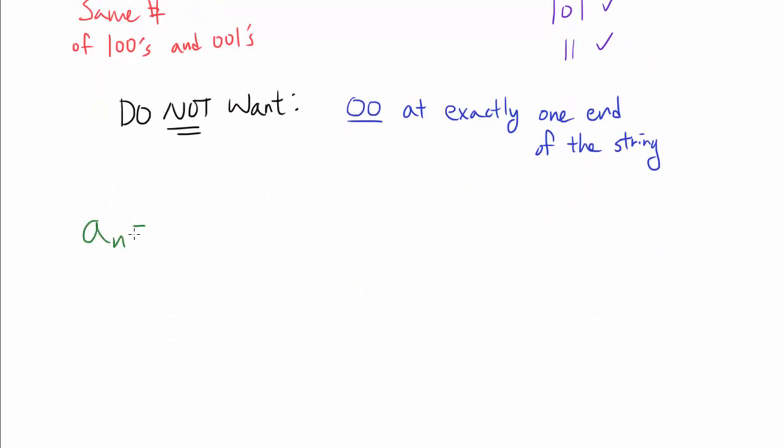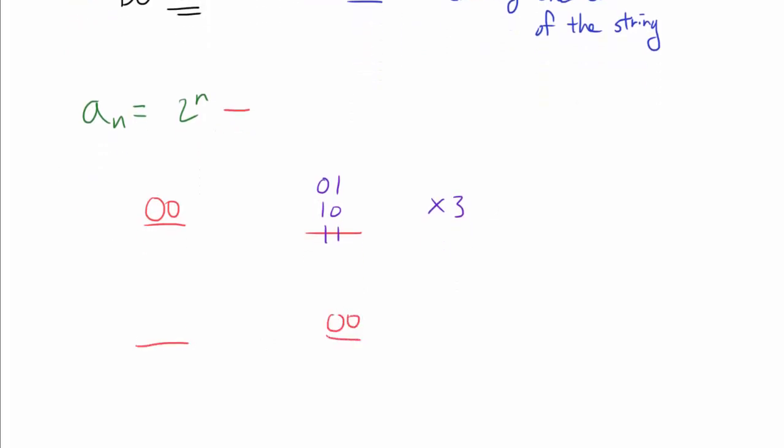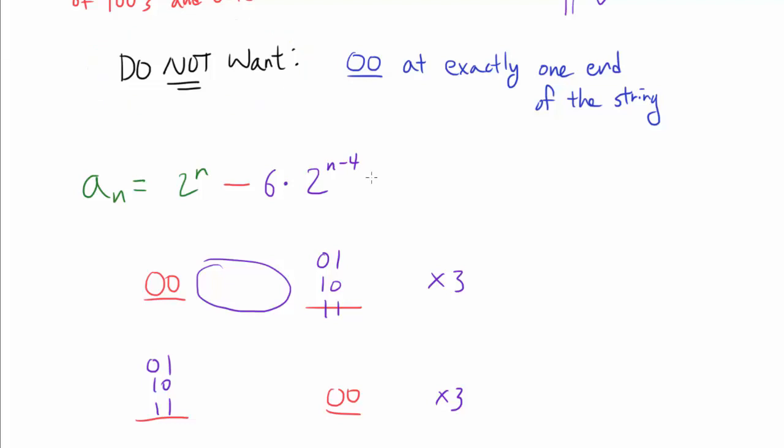Because what is a_n going to be? Well, there are 2^n binary strings of n digits long. And from this, we wish to take away the strings that have 00 at one end and something else at the other end. That something else can be either 01, 10, or 11. So there are 3 choices. Or we can have this reversed. So there are 6 cases we want to avoid when it comes to endings. And once we pick the endings, then we have 2^(n-4) ways of filling in the remaining n minus 4 digits. So there are 6 times 2^(n-4) strings that we do not want.